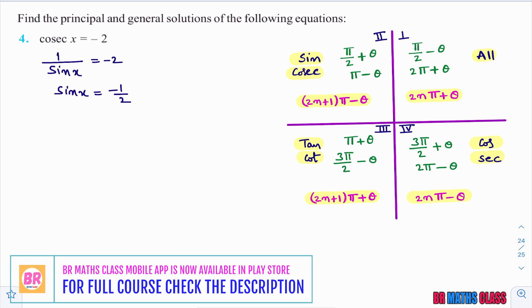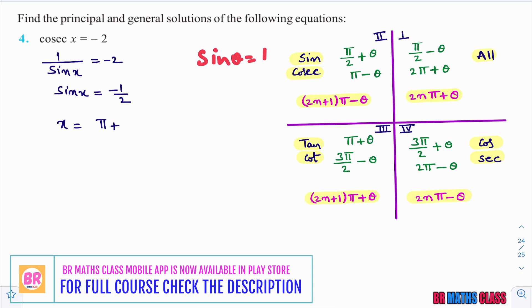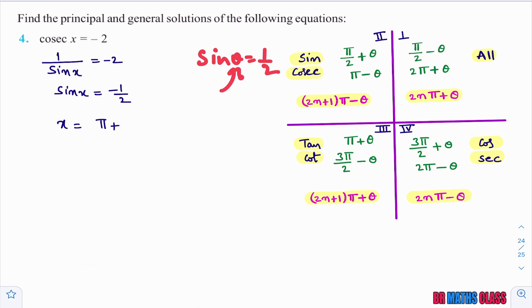What are the x values? Pi plus theta lies in third quadrant. In third quadrant sine x is negative. So pi plus theta - what value of theta makes sine theta equal to 1 by 2? Sine 30 degrees, which is pi by 6. So pi plus pi by 6. In place of theta, I will prefer pi by 6.